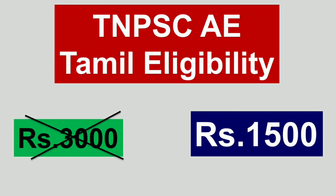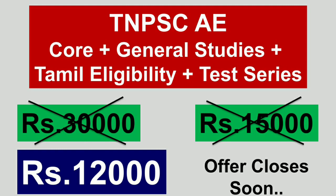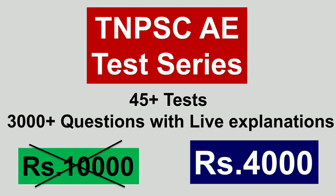Next is Tamil Eligibility — if you want to join, the fee is 3,000, and with the offer it is 1,500. If you want general studies, Tamil Eligibility, and Test Series together as a combo course, the actual fee is 30,000 and offer is 15,000; with a limited period offer, it comes down to 13,000. For the test series alone, there are 45-plus tests and 3,000-plus questions with live explanations — actual fee is 10,000 and the offer is 4,000.